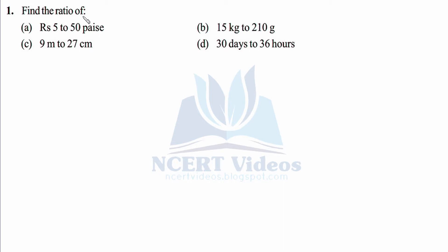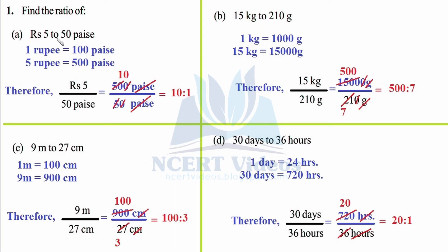Question number 1: find the ratio of (a) rupees 5 to 50 paise, (b) 15 kg to 210 grams, (c) 9 meters to 27 centimeters, and (d) 30 days to 36 hours. For part (a), rupees 5 to 50 paise — we cannot find the ratio directly because the units are not the same. We must first change to the lower denomination. Rupees and paise are called denominations of currency. The conversion factor is 1 rupee equals 100 paise, so 5 rupees equals 500 paise.